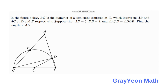Welcome to Grayon Math. We are asked to solve this problem. In the figure below, BC is the diameter of a circle with center O, which intersects AB and AC at D and E respectively. Suppose that AD is equal to 9 and DB is equal to 4. Angle ACB is congruent to angle DOV. Find the length of AE.